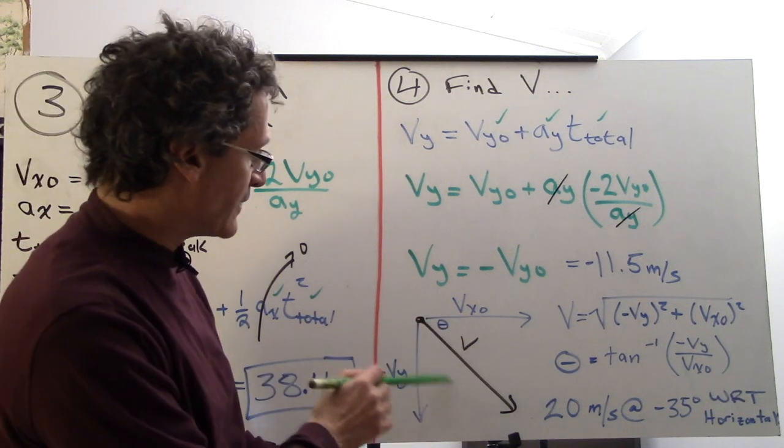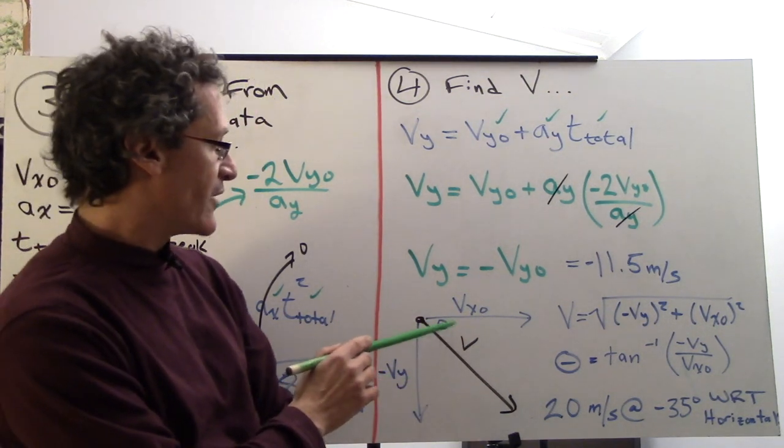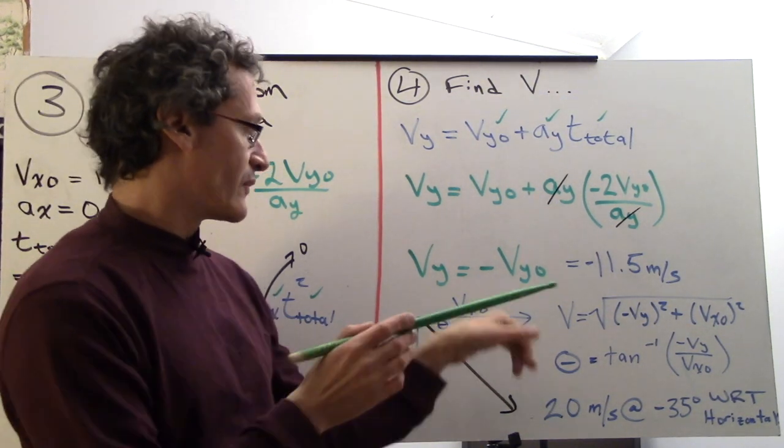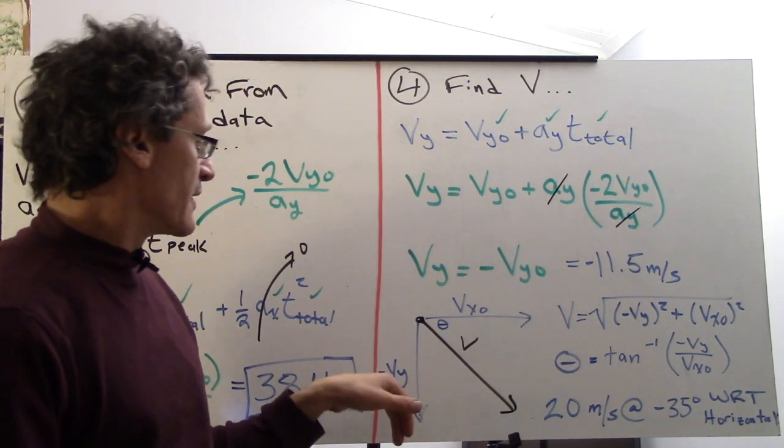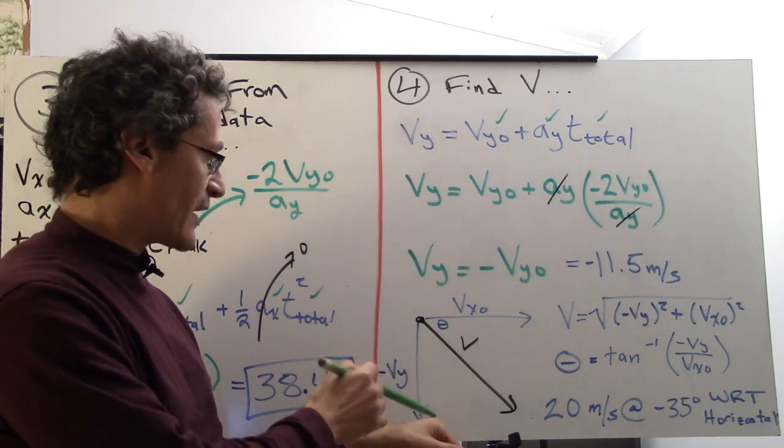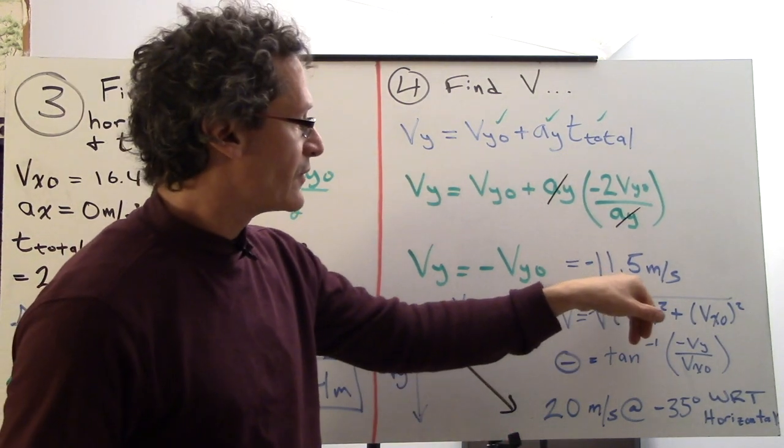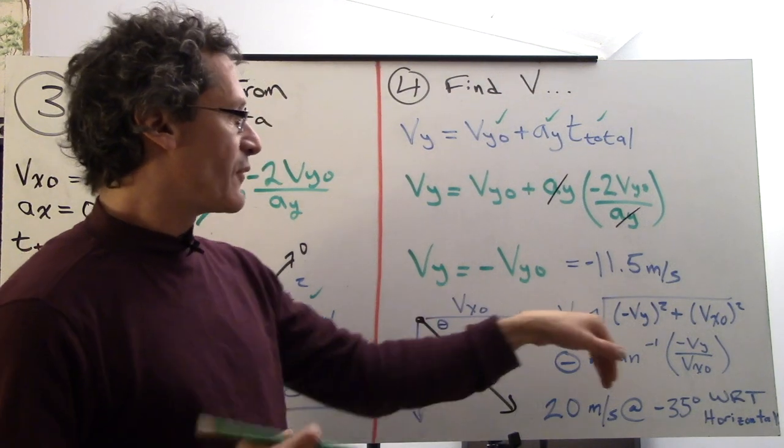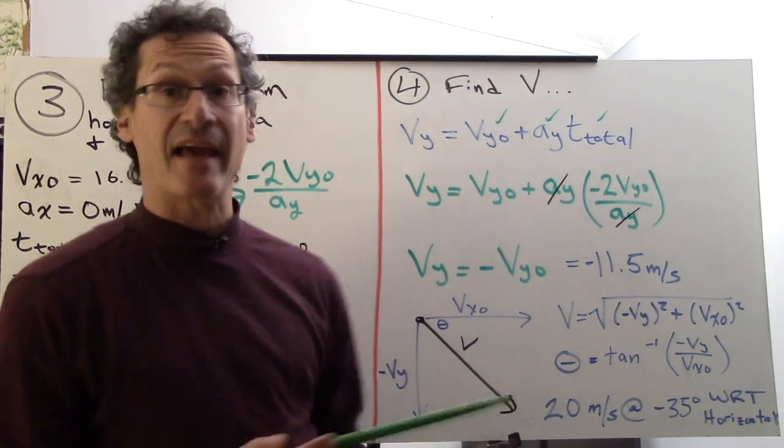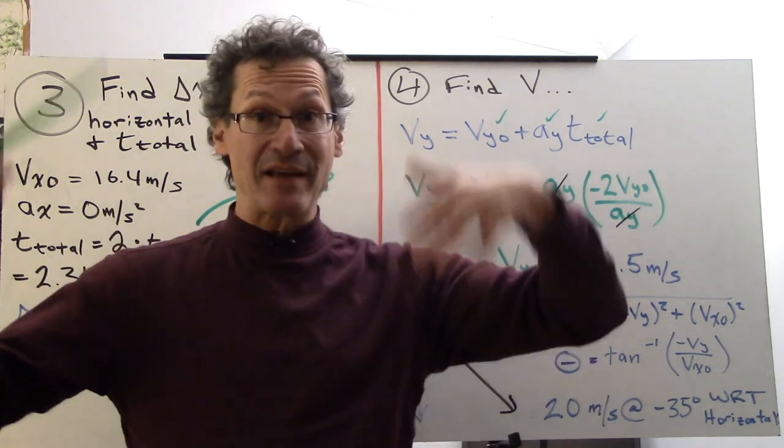So it looks like this over here. We get the landing of the projectile. The angle in v and vx-naught is over here. That was 16.4 meters per second. Negative vy, down here, negative 11.5 meters per second. And so if I use the Pythagorean theorem and the inverse tangent function, I get, guess what? 20 meters per second, which is the same velocity that we began with, at negative 35 degrees.